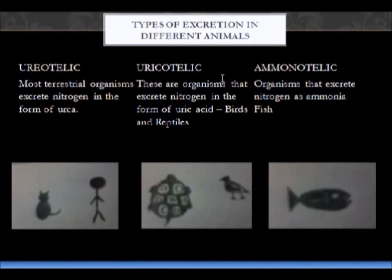Uricotelic occurs in organisms that excrete nitrogen in the form of uric acid, such as birds and reptiles. Ammonotelic occurs in organisms that excrete it as ammonia, such as fish.